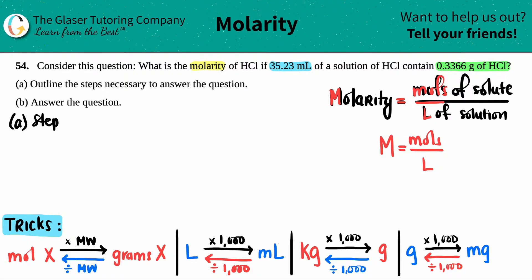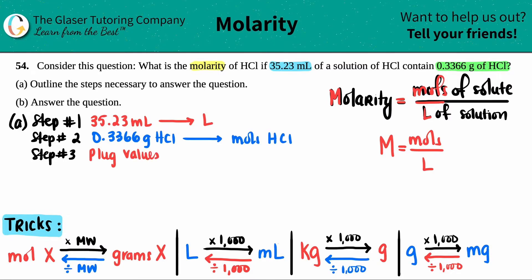So step one would be to convert the 35.23 milliliters and convert that into liters. Step two, we have to take the grams, the 0.3366 grams of the HCl, and convert it into moles of HCl. And then I have liters, I have moles. Now I can plug it into my formula. So step three is to finally plug values into molarity equation.